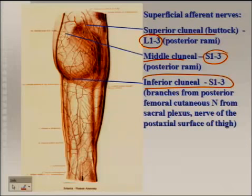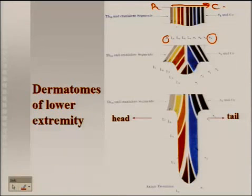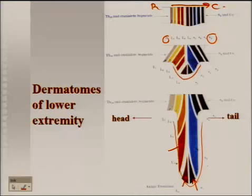You also have the middle clunial nerves, which are S1 and S3, and again there is a gap — certain dermatomal segments are not represented on the trunk. Then there is the inferior clunial nerve, which comes directly from the plexus and supplies the posterior surface of the thigh — not surprisingly, that would also be S1 to S3. A developmental diagram shows a group of dermatomes starting with L2 going to S3, where as the limb develops, certain dermatomes lose connection with the body wall, leaving a gap in between.